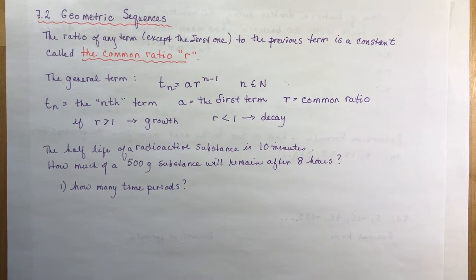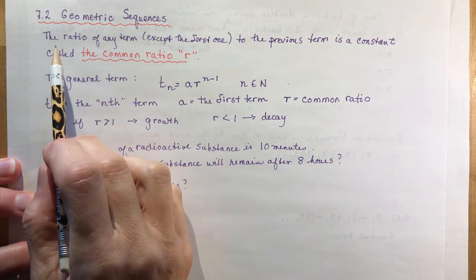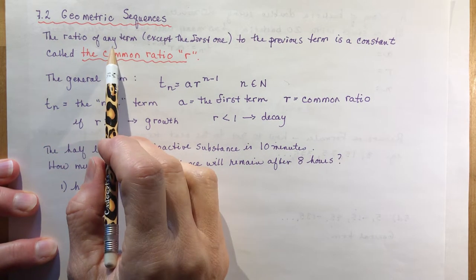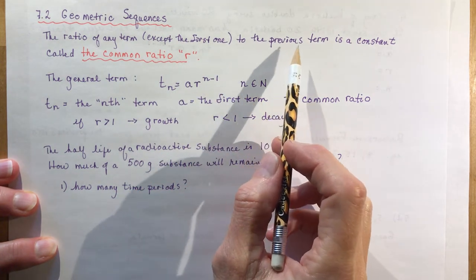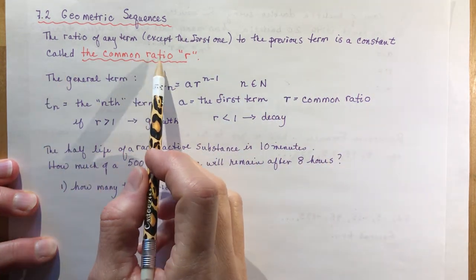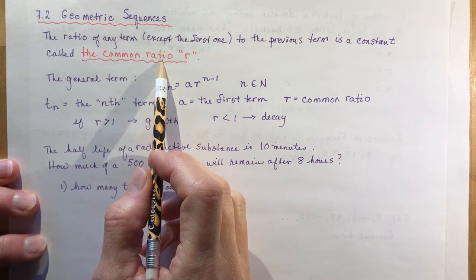7.2 is geometric sequences. Yesterday we did arithmetic sequences, and the geometric ones aren't any harder. A geometric sequence has a ratio of any term except the first one to the previous term, which is a constant called the common ratio.